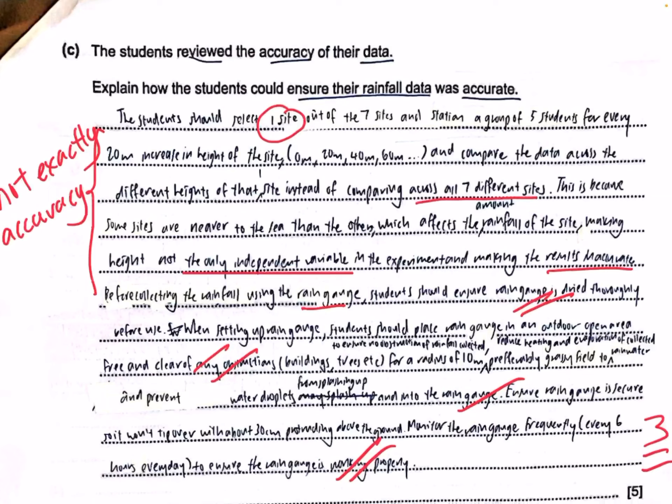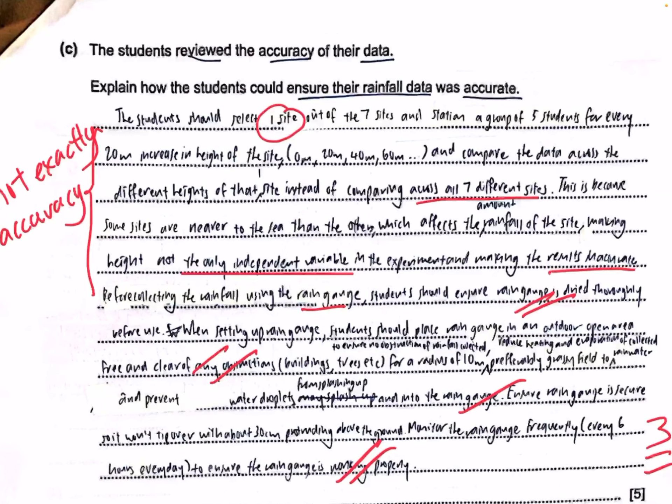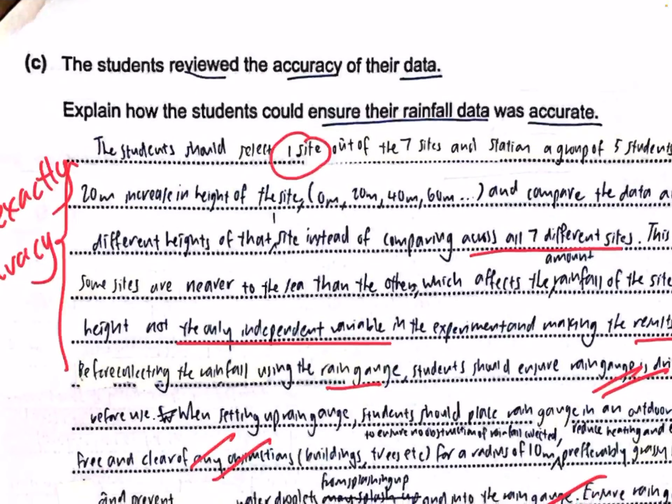Part C has students reviewing the accuracy of the data. When dealing with accuracy, we are dealing with measurement accuracy — not the number of times or the number of sites you collect data from. Accuracy has to do with whether you're collecting accurate data: your instruments, your processes of collection, whether you follow the correct steps and take the correct precautions. Your answers should revolve around instrument, process, and necessary precautions — not insufficient rounds or locations of data collection.